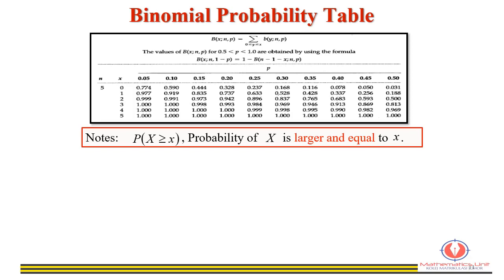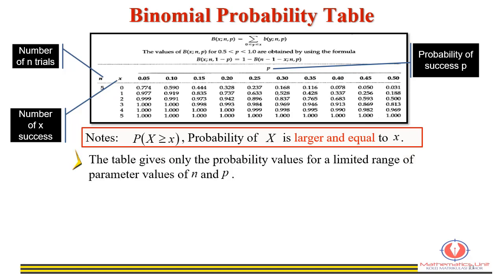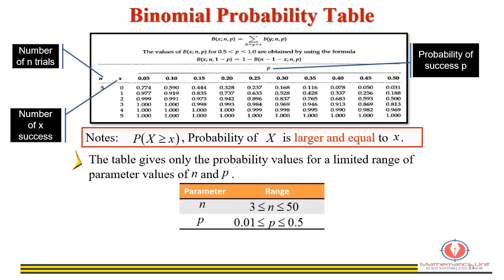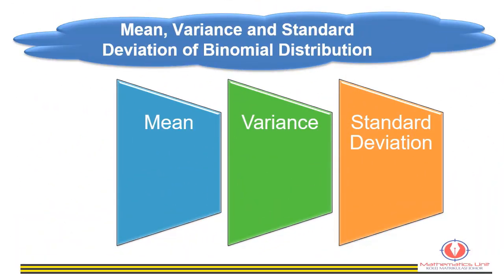In the binomial probability table, we read based on the number of n trials, the number of successes x, and the probability of success p. Not every probability can be found in the tables because there is a limited range of parameter values: n ranges from 3 to 50, and p ranges from 0.01 to 0.5 only. If the value is outside this range, use the probability distribution function formula.